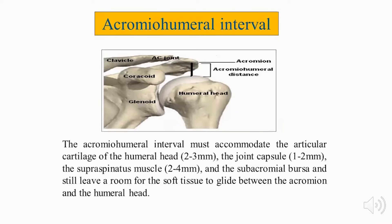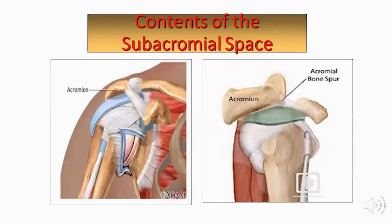This area is occupied by 2 mm of articular cartilage of the humeral head, together with the joint capsule of about 2 mm, the supraspinatus tendon of about 4 mm, and the subacromial bursa. These are the contents of the subacromial space: namely the bursa, the rotator cuff, and the biceps tendon.